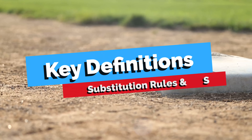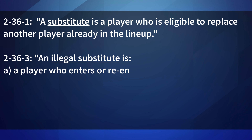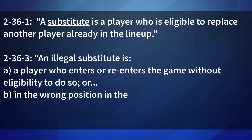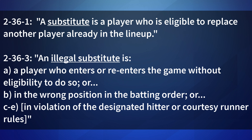Before reviewing how to signal substitutions, I want to add a few definitions. A substitute is a player who is eligible to replace another player already in the lineup. An illegal substitute is a player who enters or re-enters the game without eligibility to do so, or in the wrong position in the batting order, or in violation of the designated hitter or courtesy runner rules. Good preventative officiating and lineup card management by the plate umpire should prevent an illegal substitution, so these should end up being very rare.